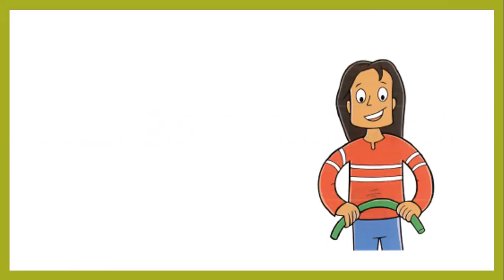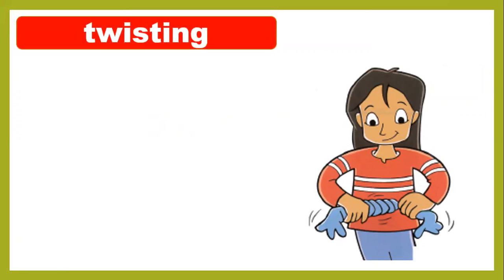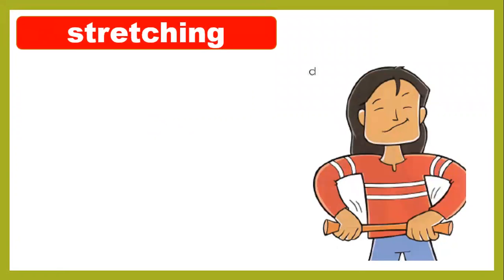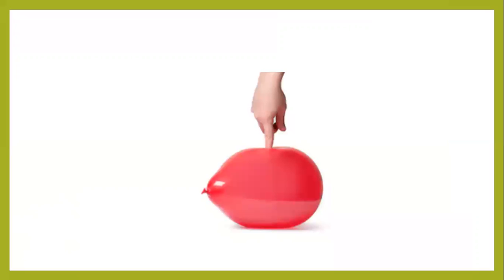In the last lesson, 3.1, we learned that some materials can be changed by hand easily because the materials are soft. Look at this girl — this shows bending, twisting, stretching, and squashing. We learned that you can change the shape in four different ways: bending, twisting, squashing, and stretching. You can change these materials by your hand because they are soft. For example, a balloon is a soft material, so you can change its shape by squashing it.